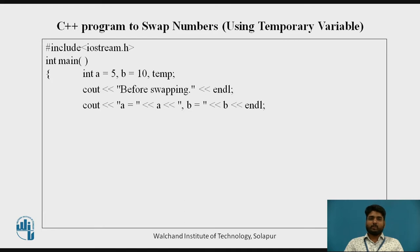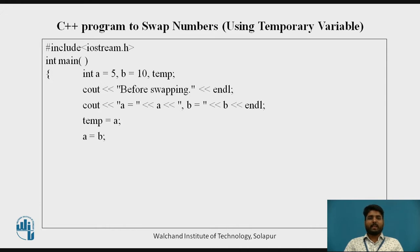Cout a value is shown, b value is shown — that is a equal to 5, b equal to 10. Then temp equal to a, so whatever the value of a is stored, that comes into temp. Then a equal to b: now the value of a will be empty, the value of b which is 10 goes into the value of a, and b equal to temp.